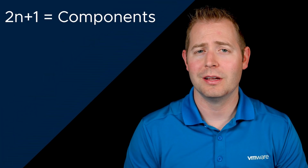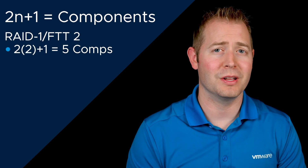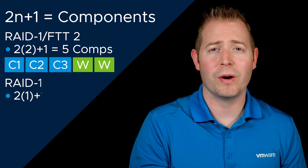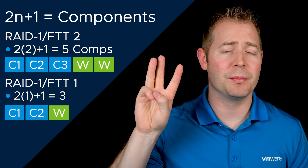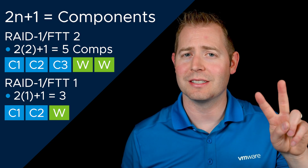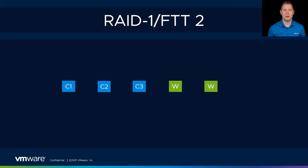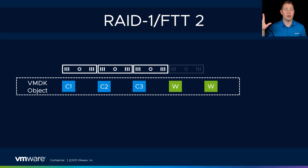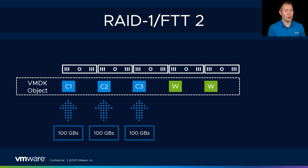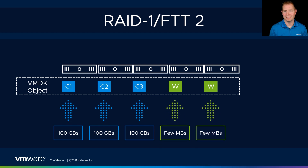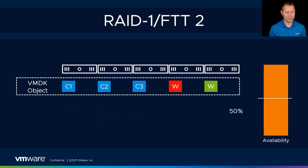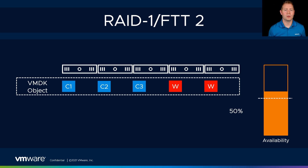With our RAID 1 FTT of 2 policy, we increase the number of data components and witness components to support those additional failures. Our formula is 2n + 1 — two times the number of failures we want to tolerate, plus one. So 2 × 2 + 1 = 5; we need five components. That means three data components and two witnesses, compared to two data and one witness with FTT of 1. We need a minimum of five ESXi hosts. For a 100 GB VMDK, three data components would use 300 GB of storage. For this policy, we could lose both witnesses and still have greater than 50% of our components available, so we'd still have access to our data.